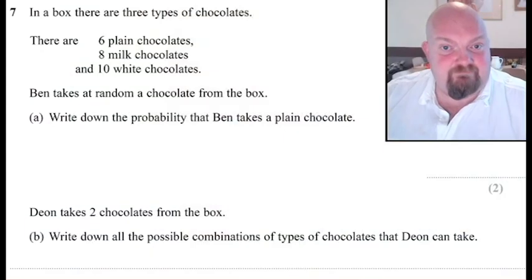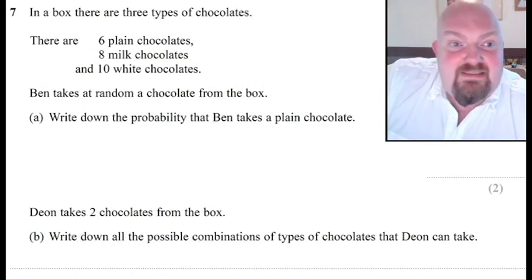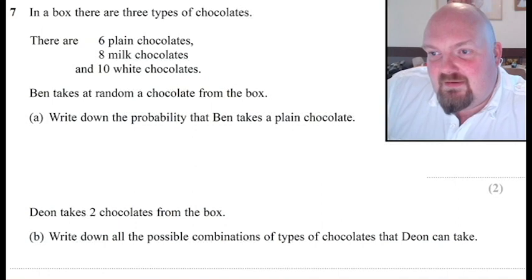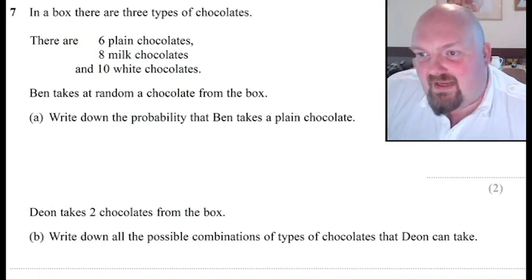So without any further ado, here's the question. It says, in a box there are three types of chocolates. There are six plain, there are eight milk, and there are ten white chocolates.